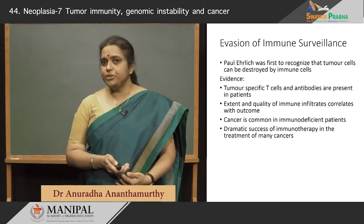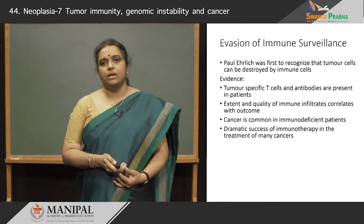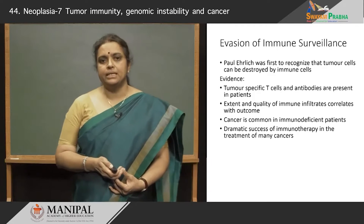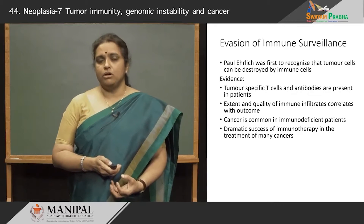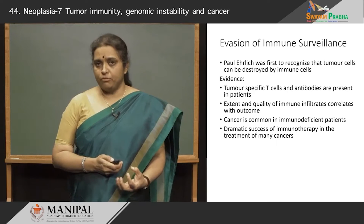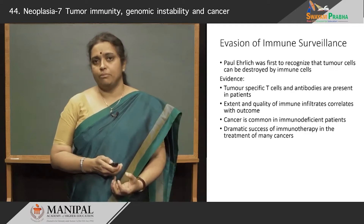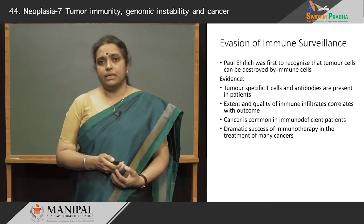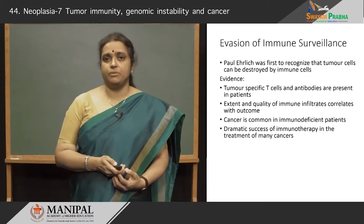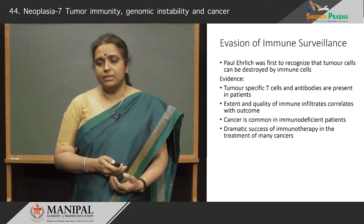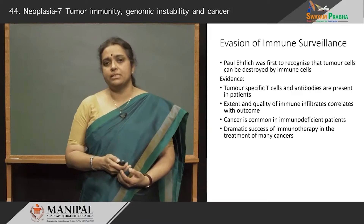Immune surveillance and how tumor cells evade this immune surveillance has been a very important topic in cancer biology. It was Paul Ehrlich who first recognized that tumor cells can be destroyed by immune cells. If you consider carcinogenesis or the growth of a tumor as a foreign kind of process occurring within the human body, one wonders why the immune cells do not take care of these proliferating tumor cells. We now have evidence for why immune surveillance works in cancer.